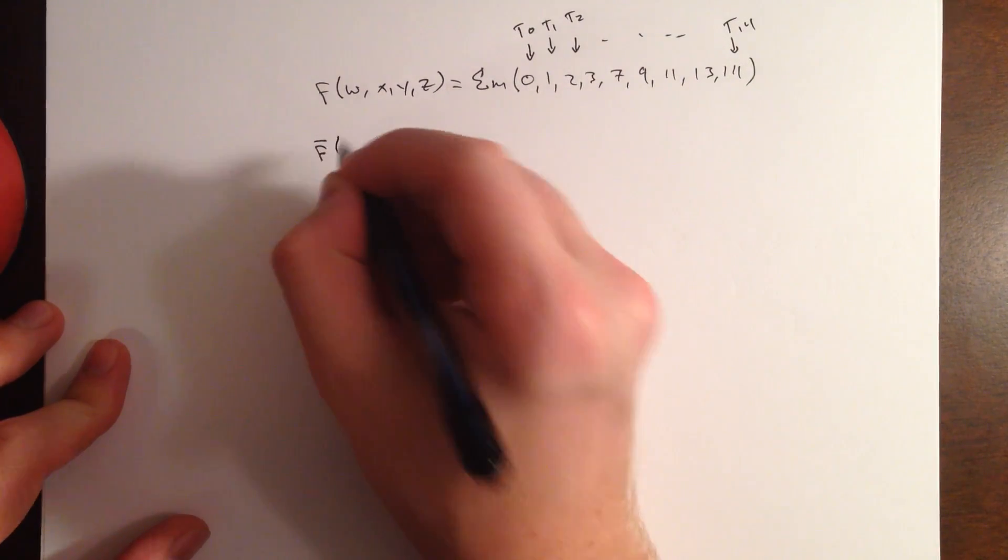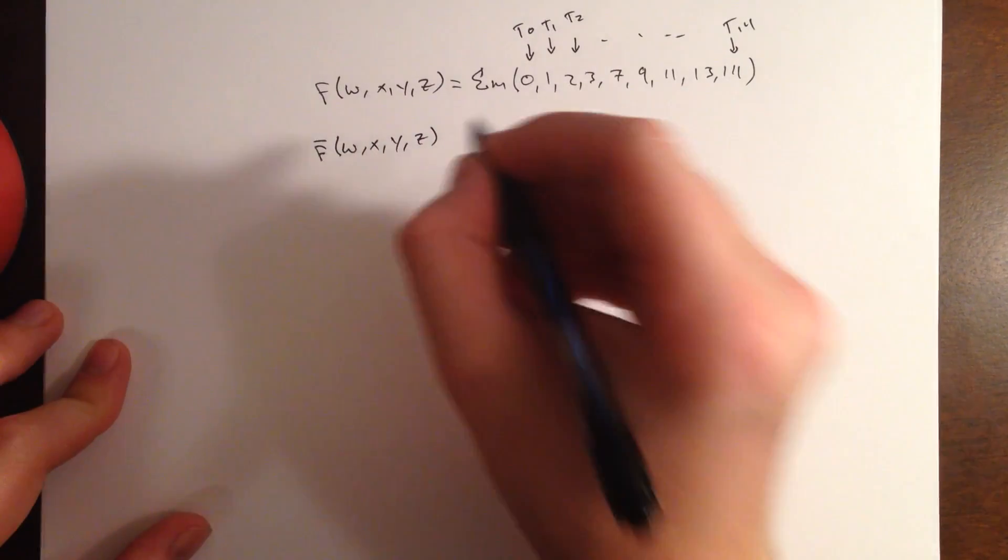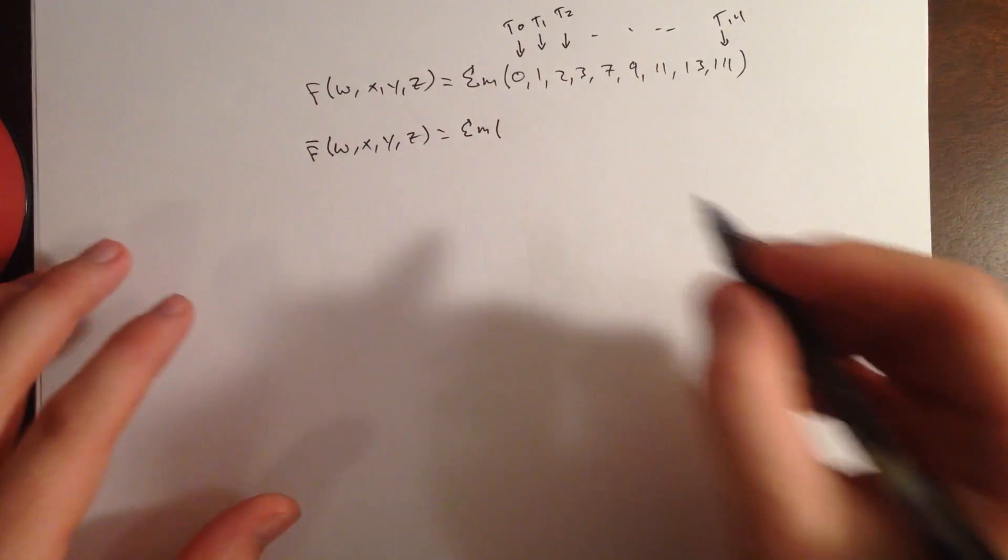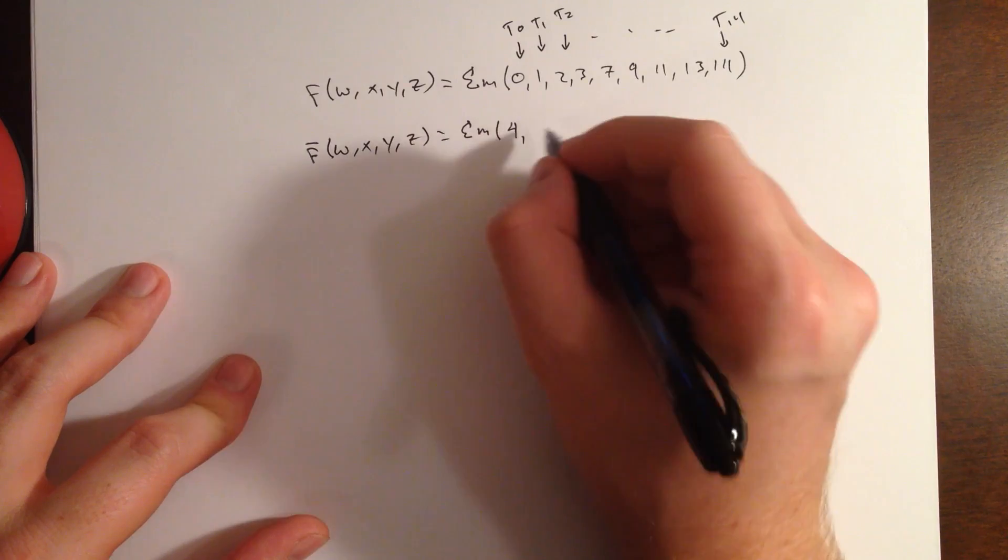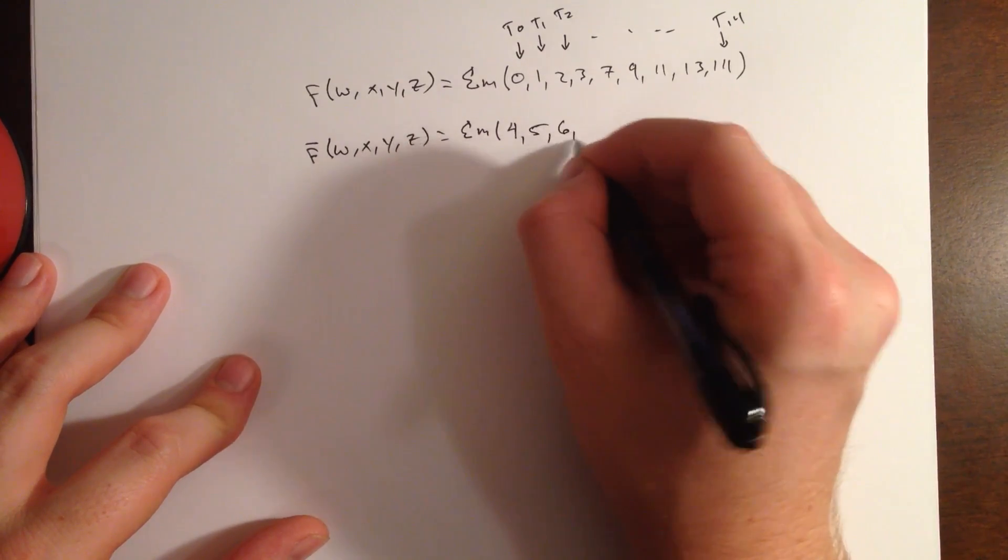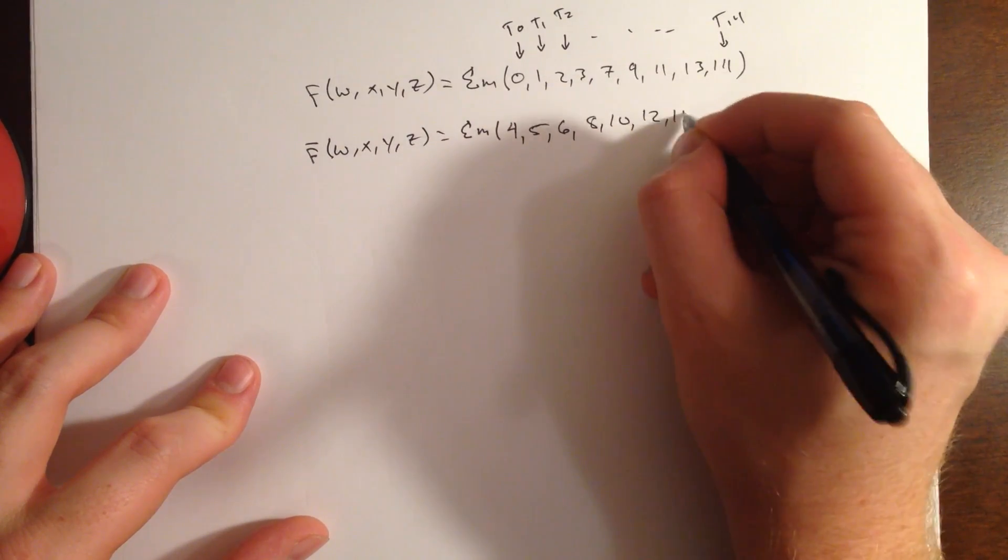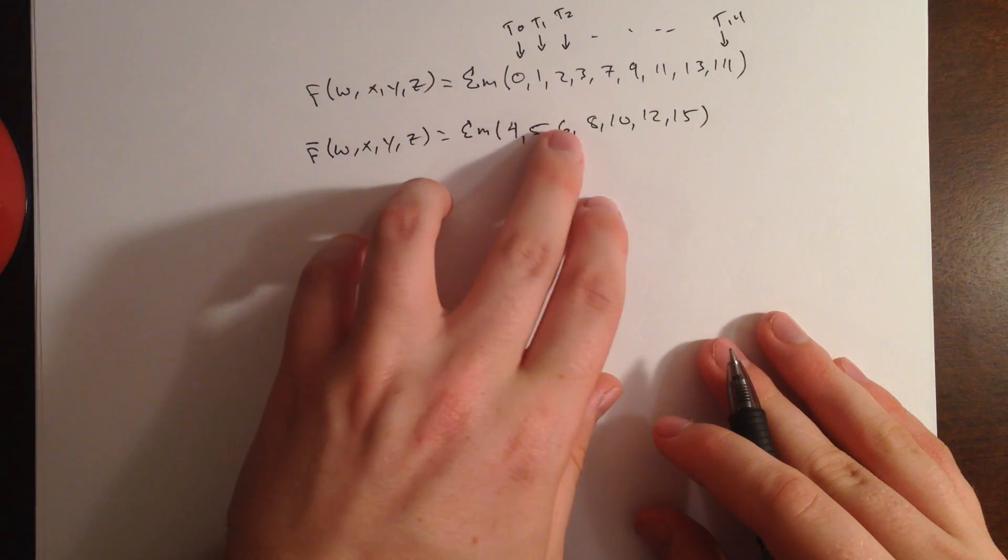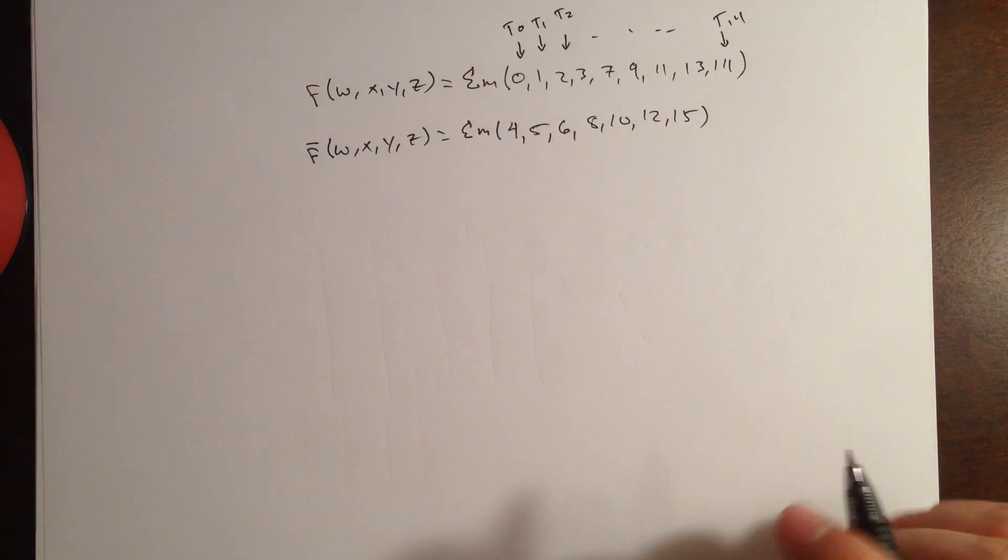And something incredibly important that I think I should point out for this, f' of wxyz is going to be the sum of the minterms of everything that f isn't. So, we skipped 4, 5, 6, 8, 10, 12, and 15. I think that looks right. Yeah, that looks right.